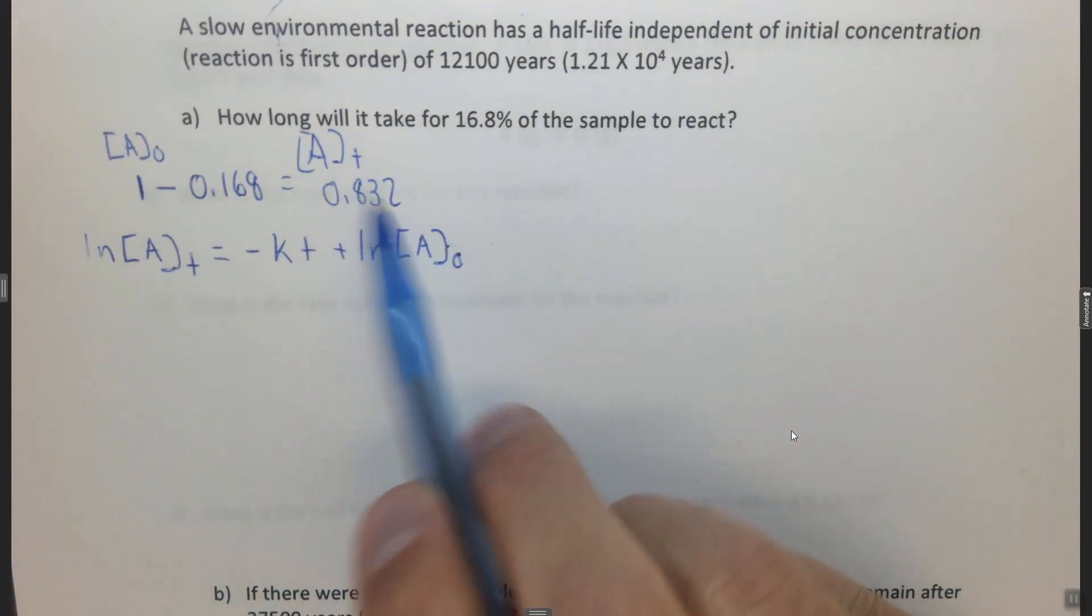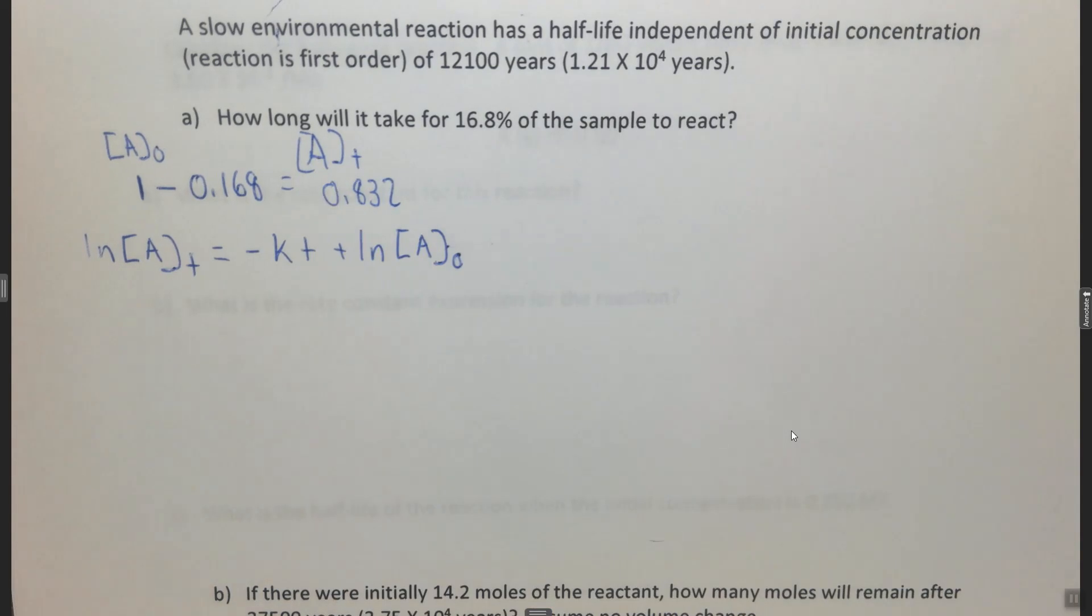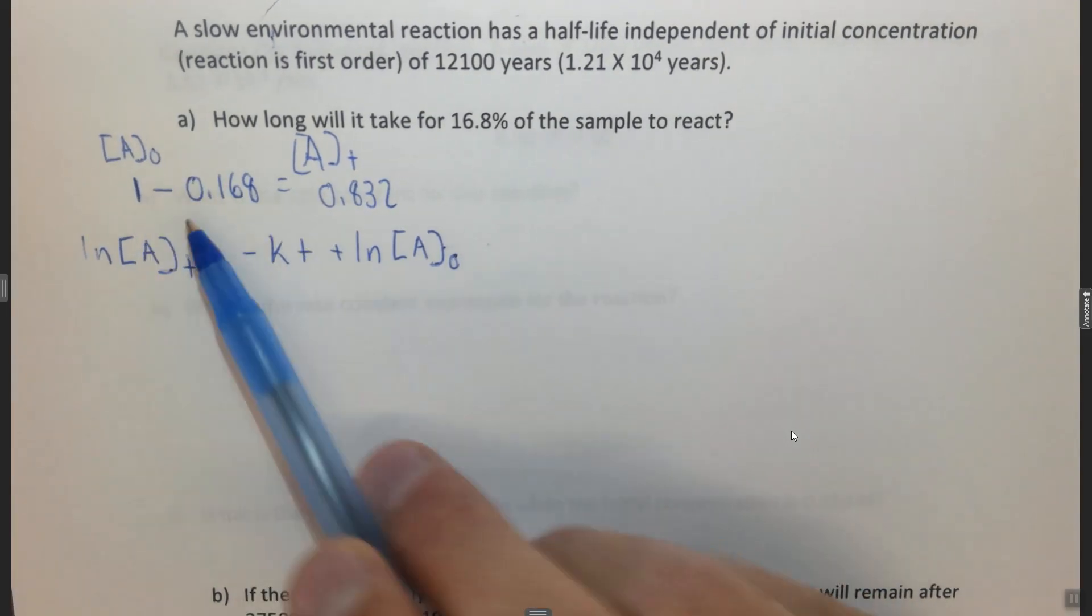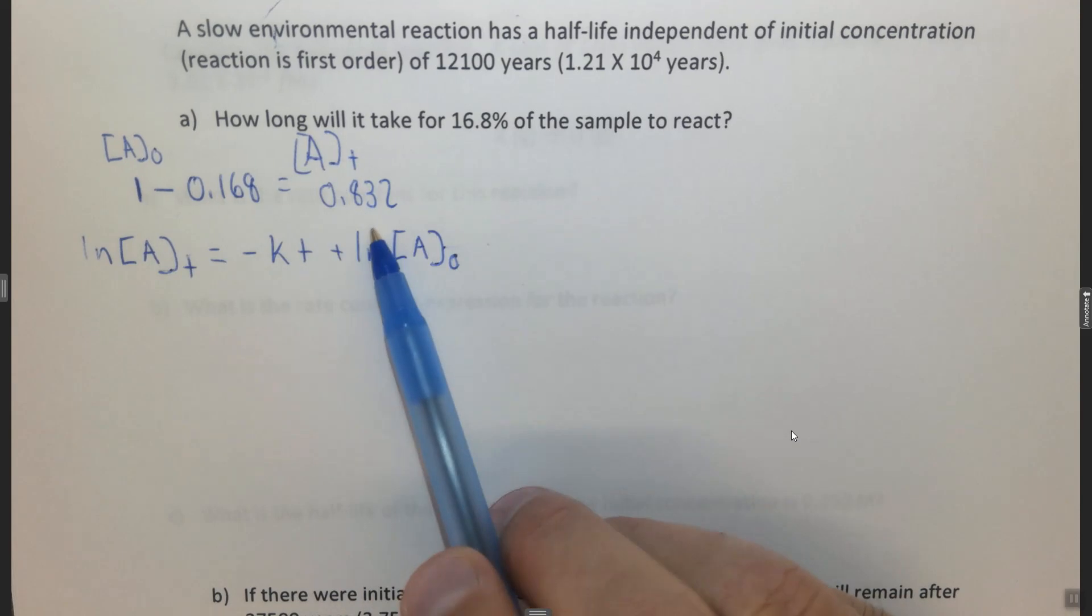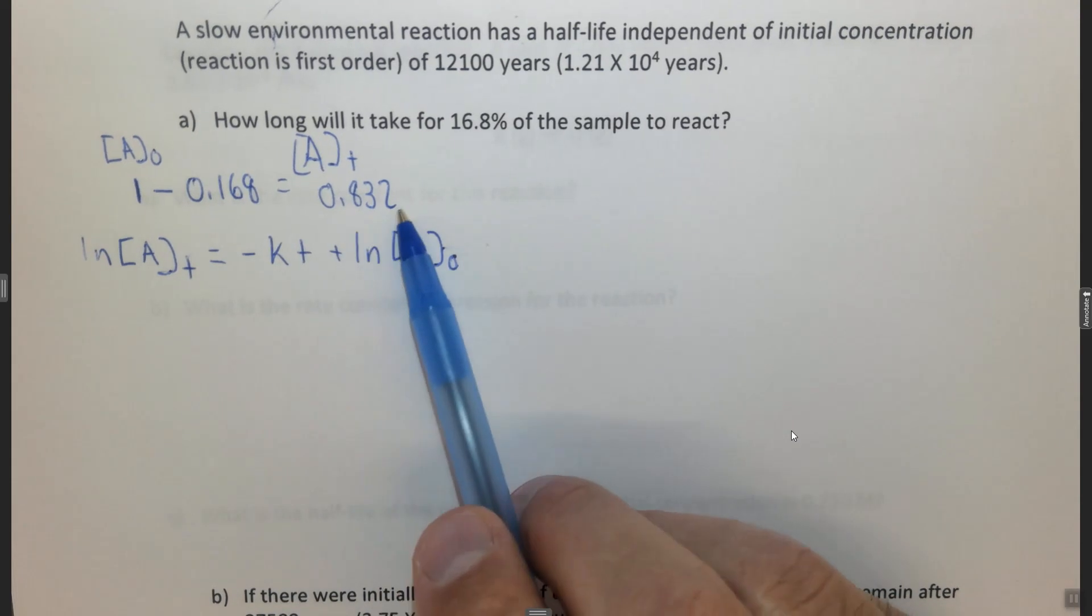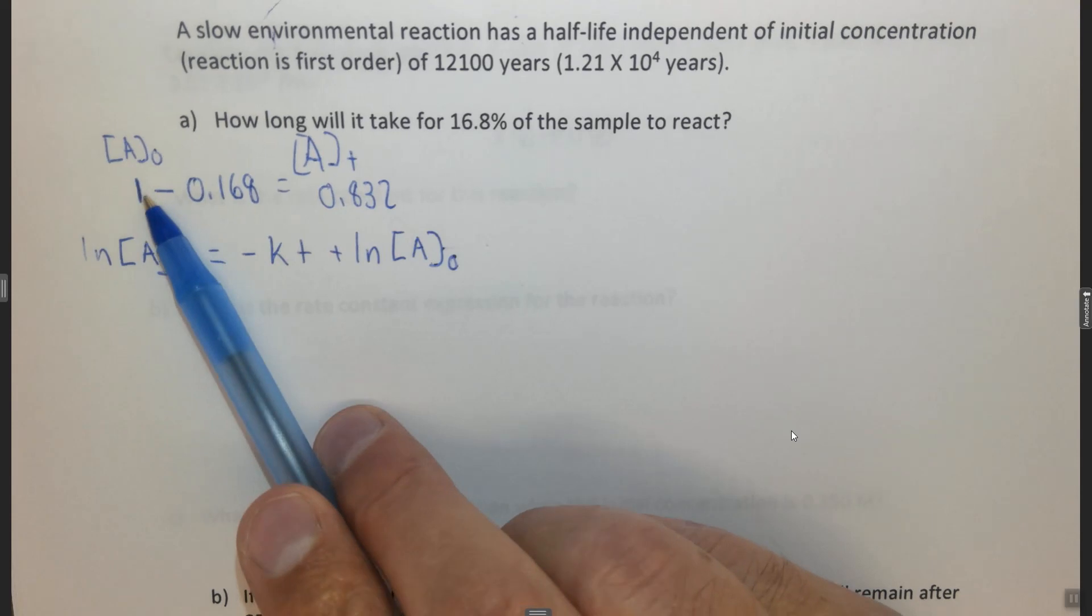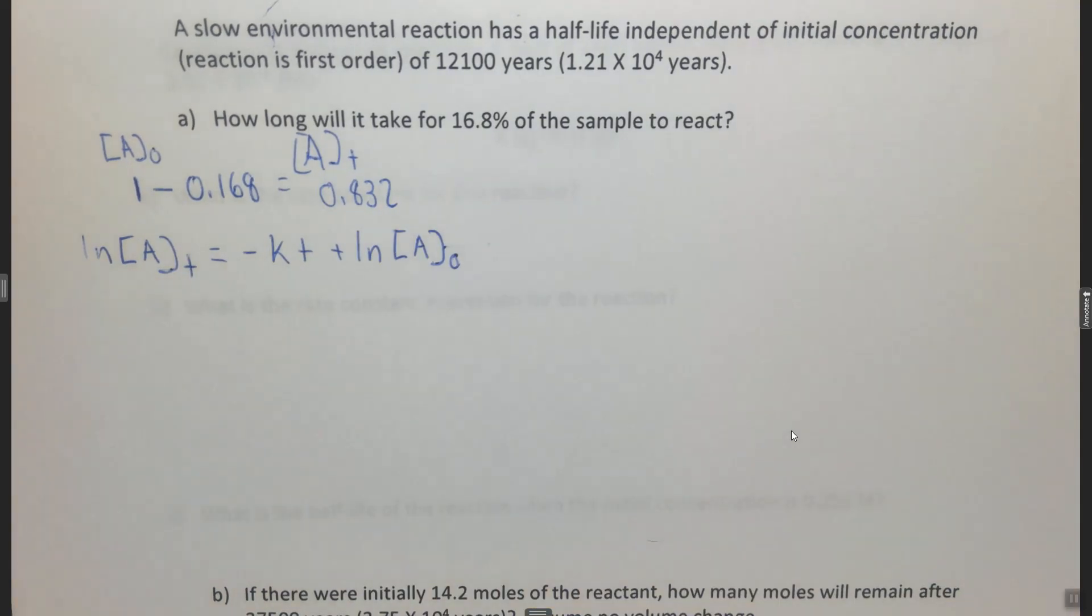Said another way, 83.2% of A should be left. So we're going to use the initial concentration of A as 1 and plug that in. Then we're going to use 0.832 as the concentration of A at some time. Again, you could use 1 and 83.2 if you prefer, you get the same answer, but I'm going to use 1 and 0.832.